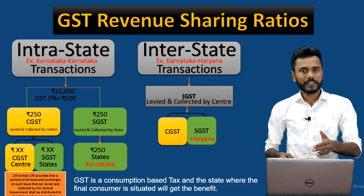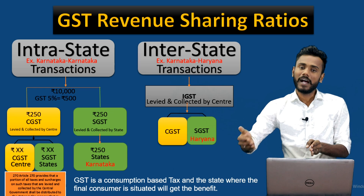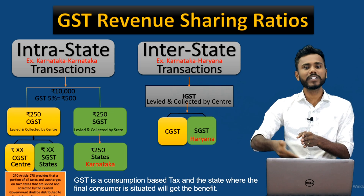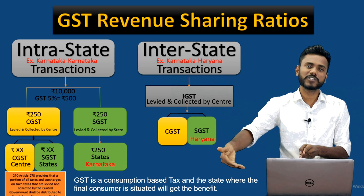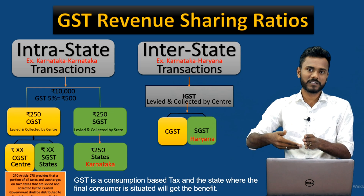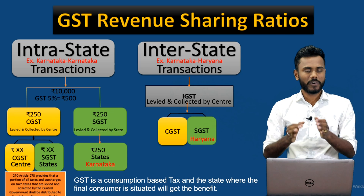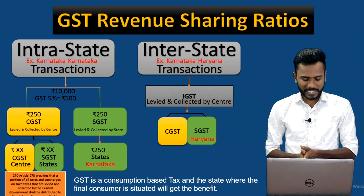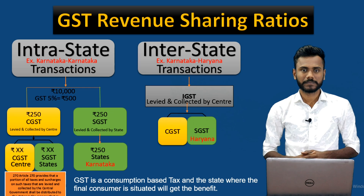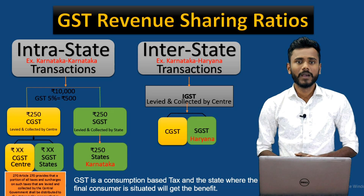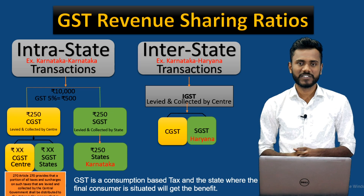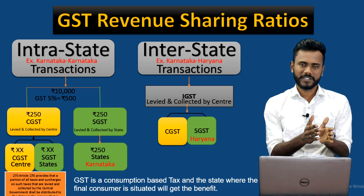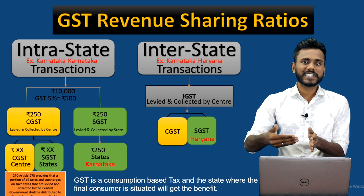For example, if the goods are moving from Haryana to Andhra Pradesh, the center will transfer the IGST value to Andhra Pradesh. If the goods are moving from Andhra Pradesh to Tamil Nadu, the center transfers the taxes to Tamil Nadu. Very simply, GST is a consumption-based tax and wherever the final customer is situated, that state will get benefited. For more information, please refer to Article 270 of the CGST Act, where all the tax revenue shares are described.